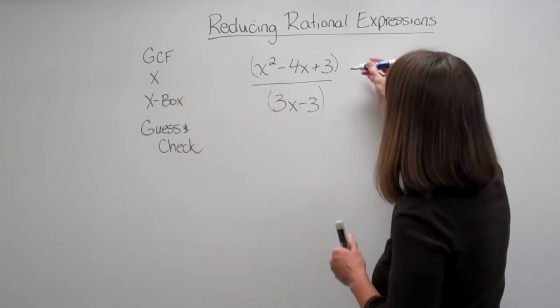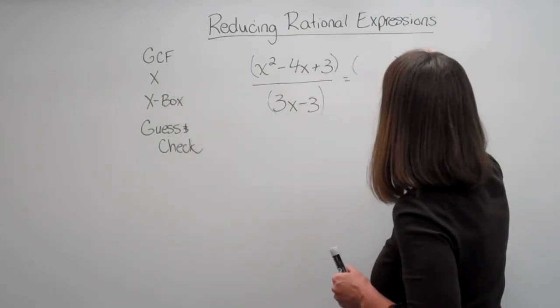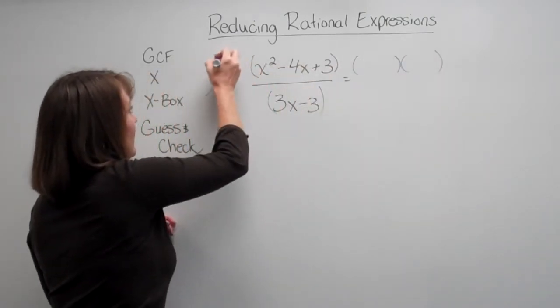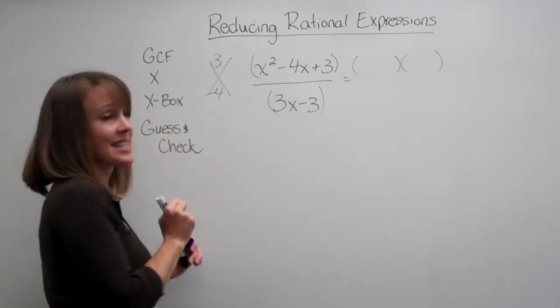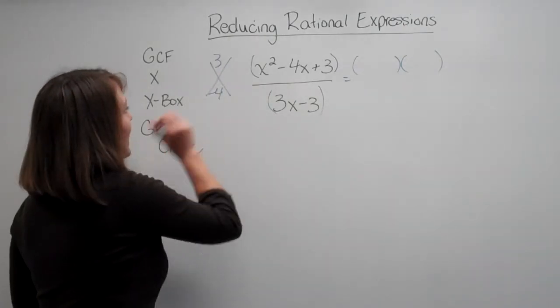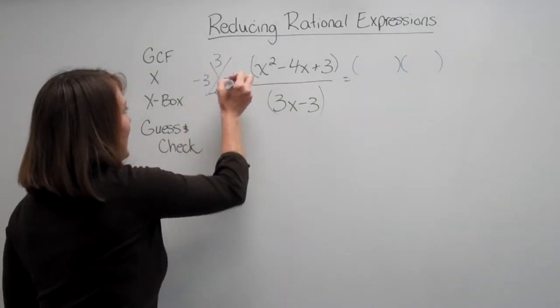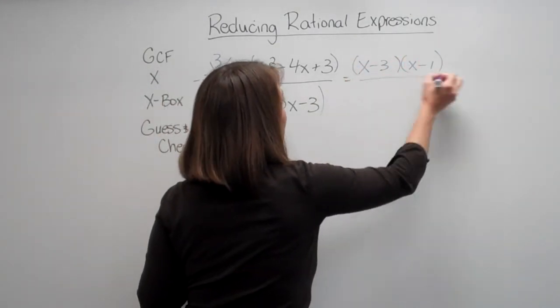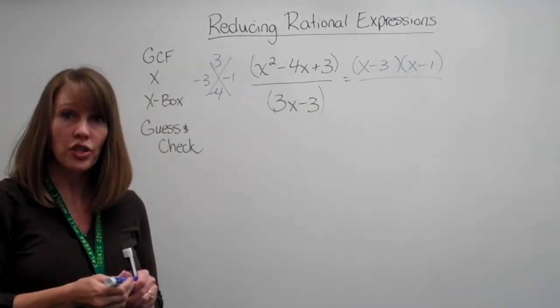Just our x. So we're going to say, alright, this is the same as, we're going to say, factors of three that add together to get negative four, that's going to be negative three and negative one. So this is going to be x minus three and x minus one. That's the factors for the top.